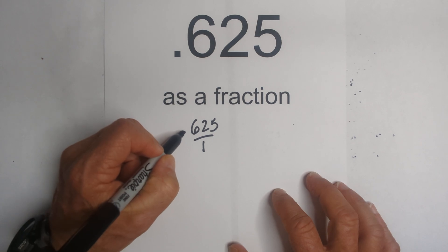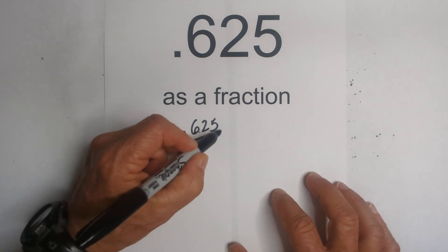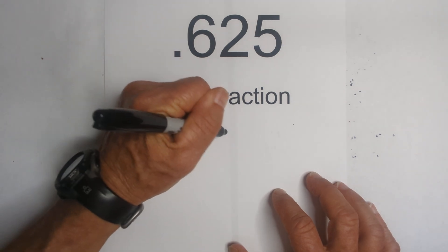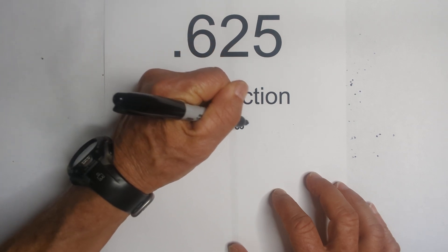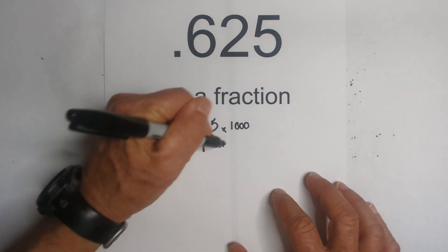So I need to move the decimal one, two, three places. So in order to do that, I'll multiply it by a thousand. And I'll do the same to the bottom.